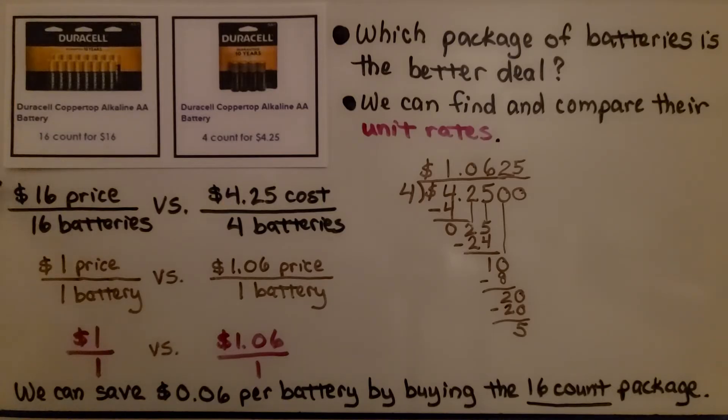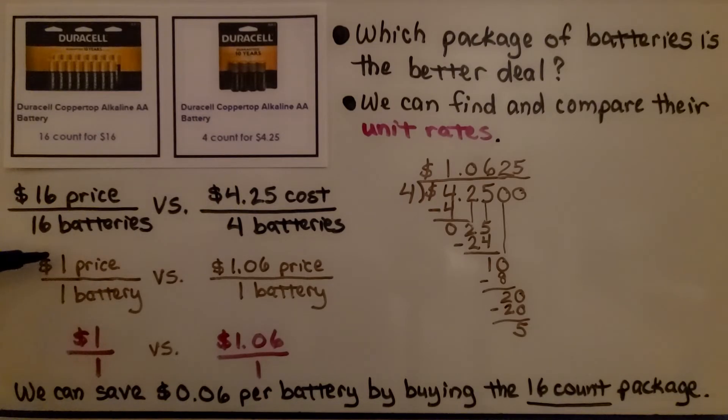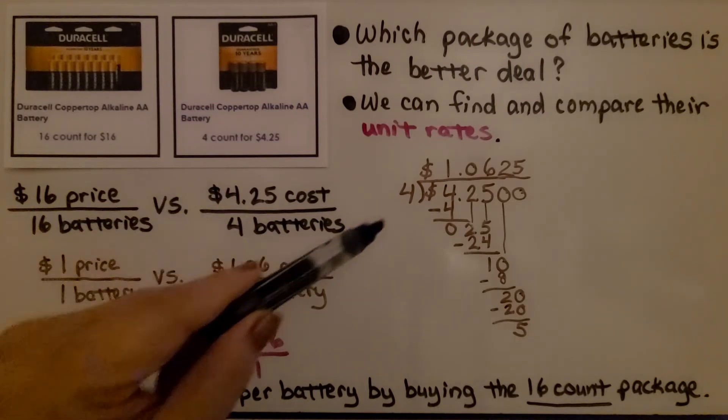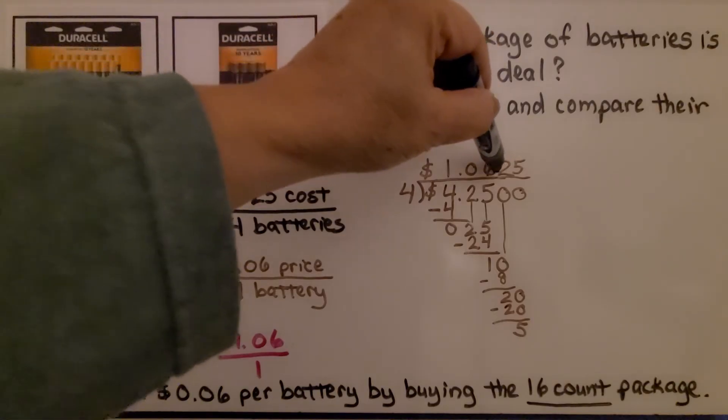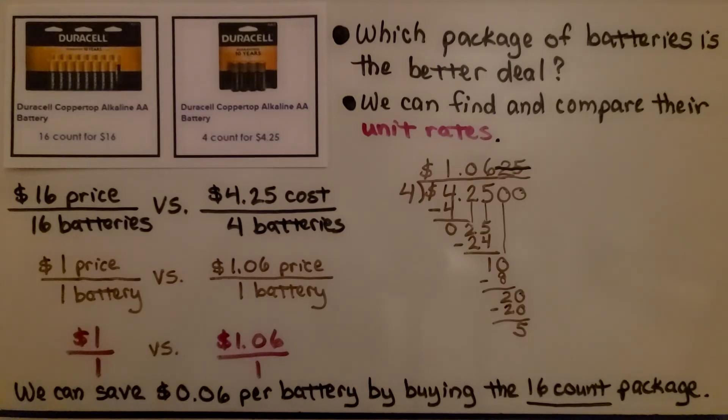We get $16 for the price and we get 16 batteries. We're going to compare it to a $4.25 price for four batteries. This comes out to be $1 for the price for one battery. And this comes out as $1.06 for the price for one battery. We can do $4.25 divided by four. And because we're dealing with money, this two tells the six to stay the same. We have two place values for the cents. So it rounds to $1.06 for one battery. Our unit rate is $1 for one battery and here it's $1.06 for one battery. That means we can save $0.06 per battery by buying the 16 count package. We don't pay as much for each battery. The unit rate is less expensive.